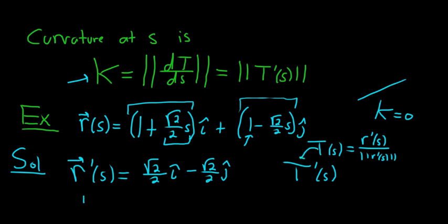So we have R prime of S. The magnitude of R prime of S, if you recall from a previous video, it's always a unit vector. So this is 1. If you work it out though, you would get 1. Let's do it.